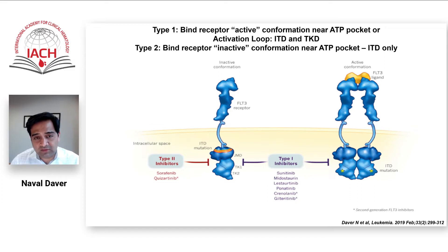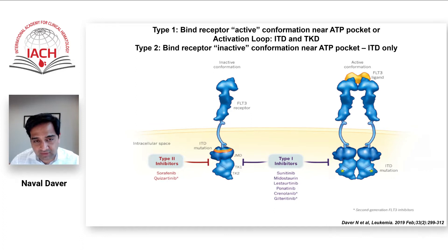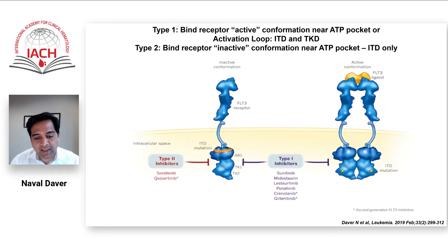There's a group of type 2 FLT3 inhibitors. These include drugs like sorafenib and quizartinib, which are very effective and powerful FLT3 inhibitors, but they only can target the FLT3 ITD, which is the inactive conformation. So if a patient has a TKD, also called D835, or an ITD with a TKD mutation, then sorafenib and quizartinib are not going to be our first choice. On the other hand, the type 1 FLT3 inhibitors — the best one known is gilteritinib, but others include crenolanib and midostaurin — cover both the ITD and the TKD or D835.